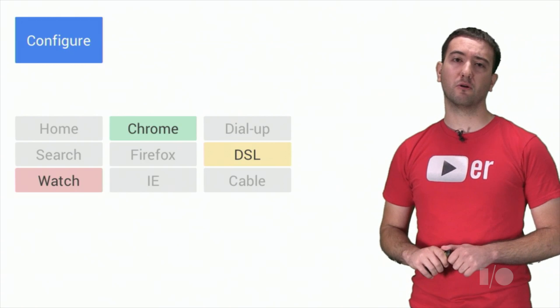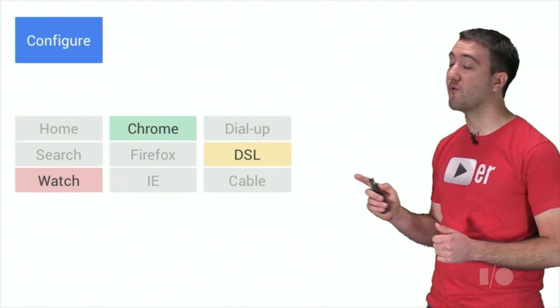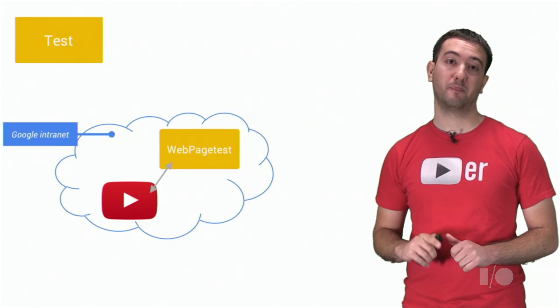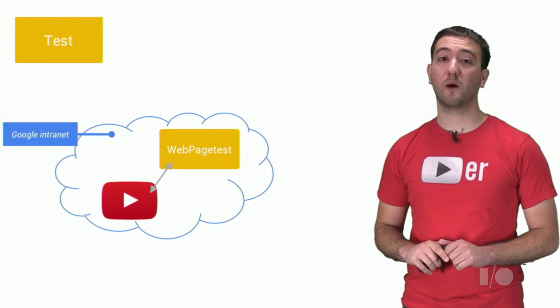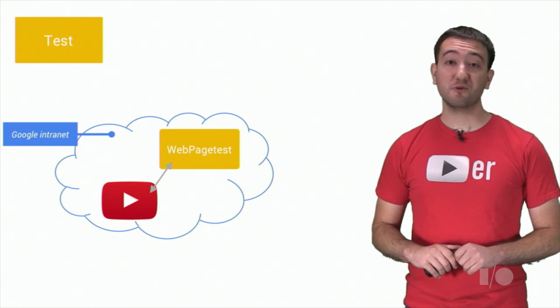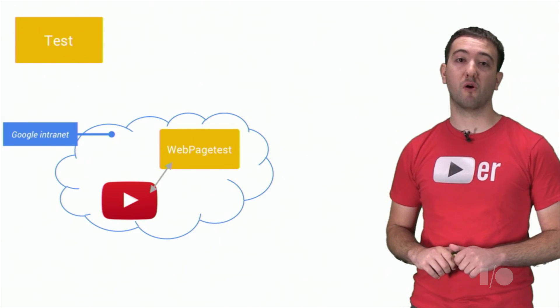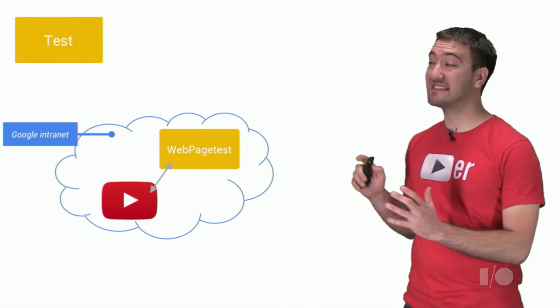WebPageTest gives you full control over the type of use case for which you want to test. For example, we may be interested in the watch page performance in Chrome over a DSL connection. And being a free public tool, WebPageTests are run on ordinary computers connected to the internet. To test YouTube, however, we need more privileged access to beta versions of the site. So for this reason, we run our own private instances of WebPageTest inside of Google.